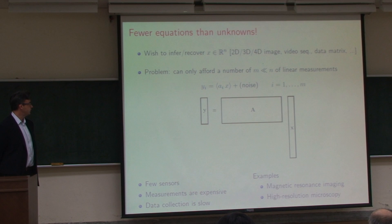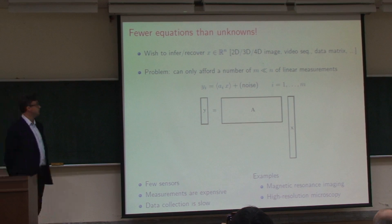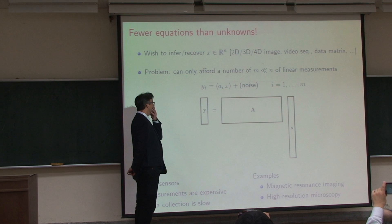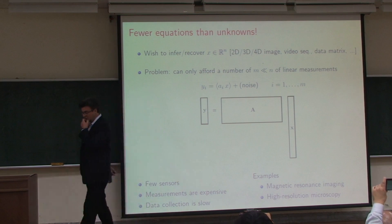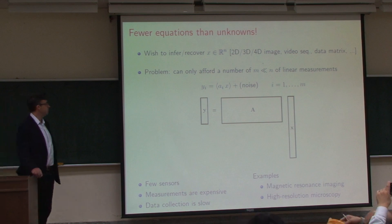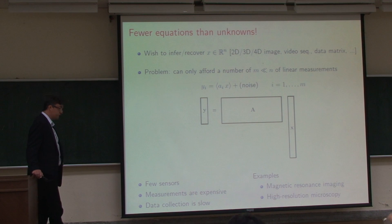We're going to talk about a very important subject in data science: situations in which we have fewer equations than unknowns. There is an object of interest, x, which could be a signal — a 2D, 3D, or 4D signal, an image, a video sequence, a data matrix. In many cases I cannot acquire much data about this signal of interest, perhaps because sensors are expensive to manufacture and so I only have a few sensors and can only record a few data points, or perhaps because the measurements themselves are very expensive.